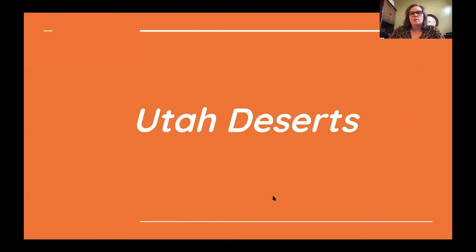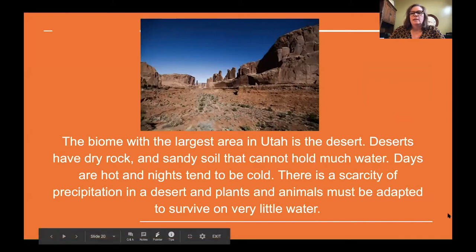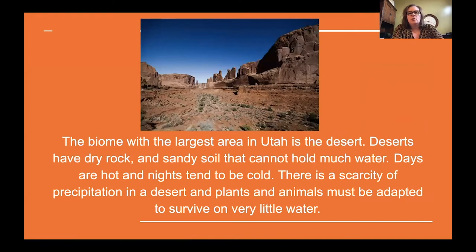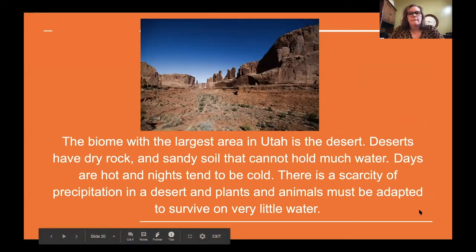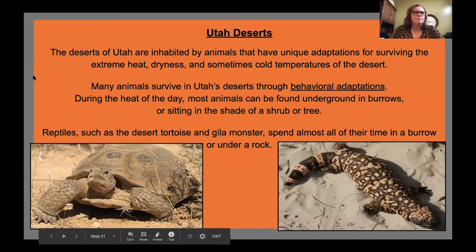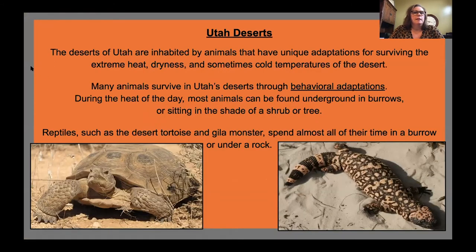Now let's move on to Utah deserts. The biome with the largest area in Utah is the desert. Deserts have dry, rocky, and sandy soil that cannot hold much water. Days are hot and nights tend to be cold. There's a scarcity of precipitation, and plants and animals have to be adapted to survive on very little water.